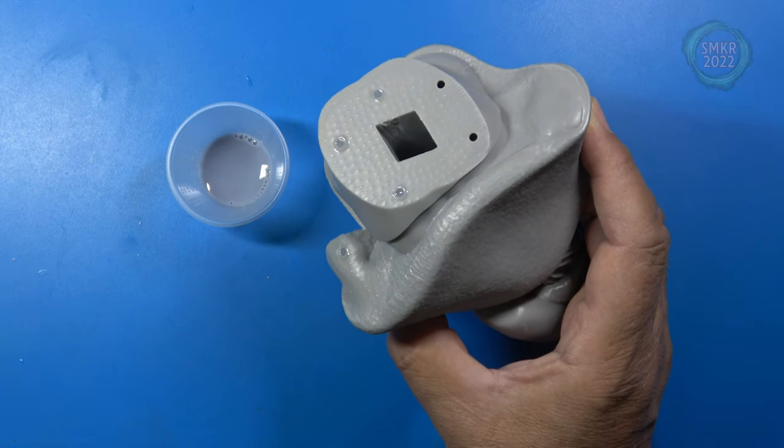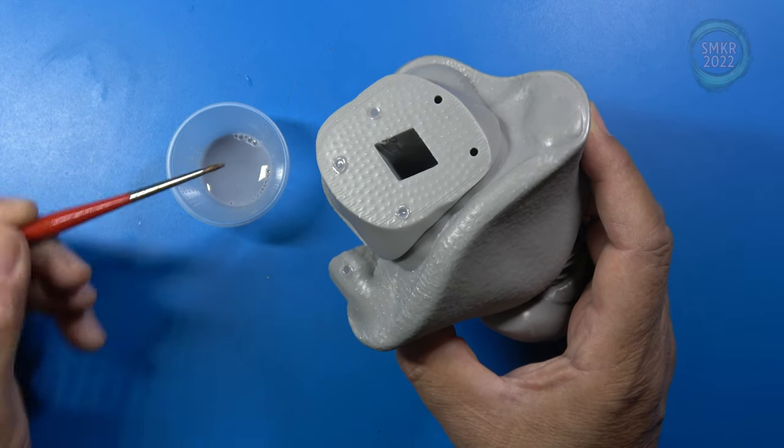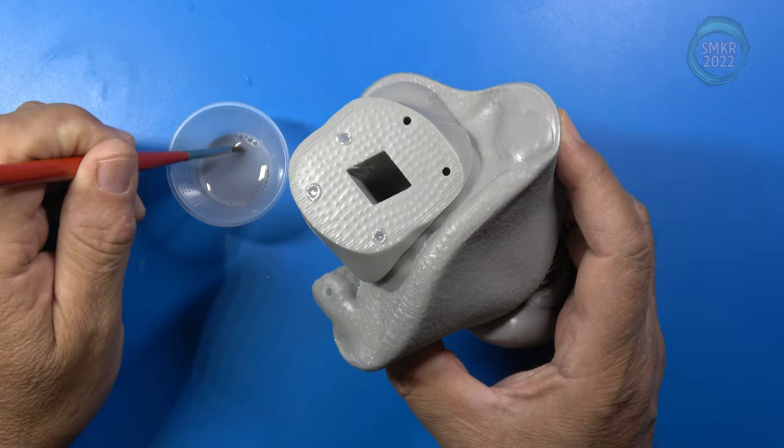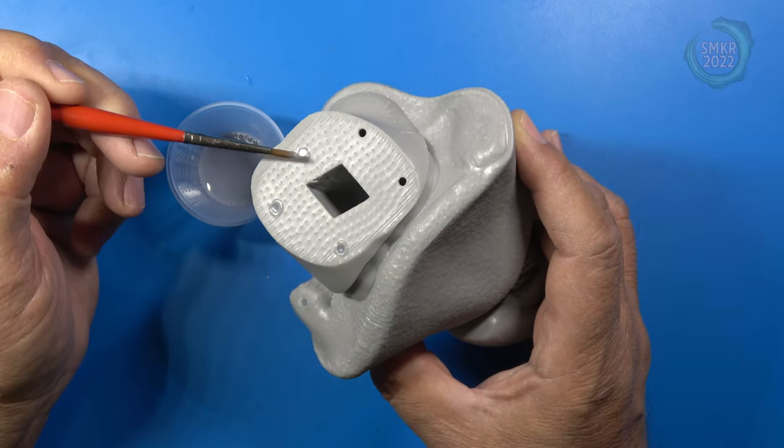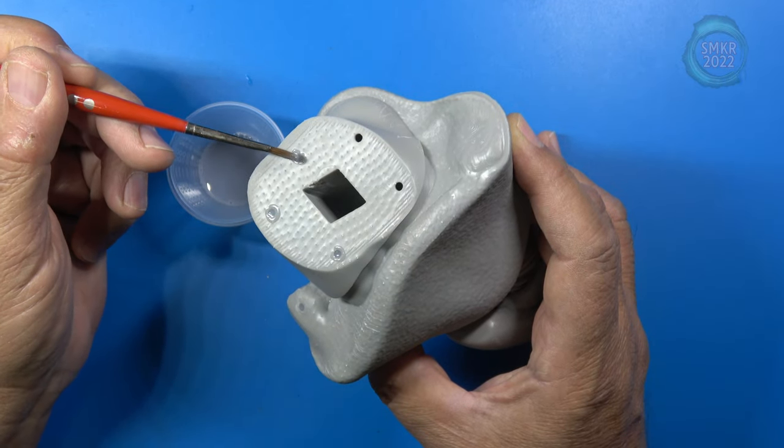The big thing is, don't leave your resin or applicator around the UV light because it will harden up as soon as the UV light hits it. And of course, you don't want to do this outside.